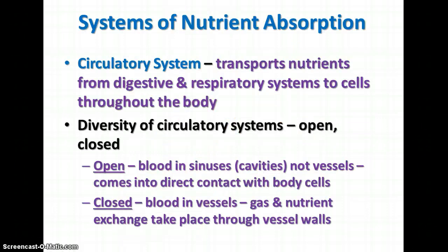Another system involved with nutrient absorption is the circulatory system, which transports nutrients from the digestive and respiratory systems to cells throughout the body. There are open circulatory systems, closed circulatory systems, and even animals that depend on diffusion from cell to cell. In open circulatory systems, blood is in sinuses or cavities rather than vessels, and comes into direct contact with body cells. In closed circulatory systems, blood remains in vessels, and gas and nutrient exchange takes place through the vessel walls.